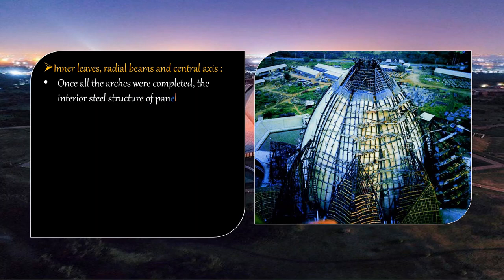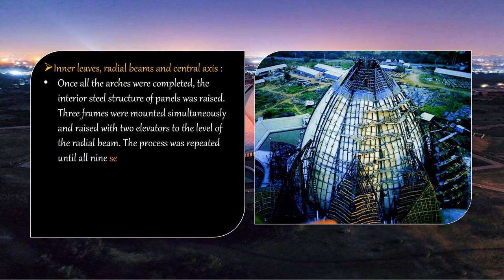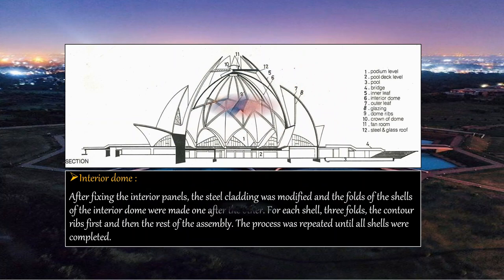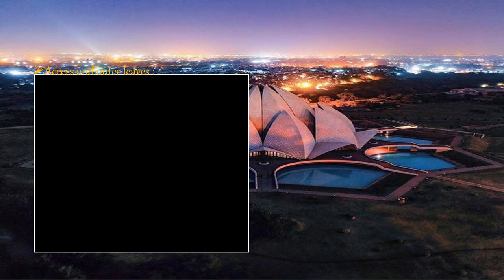Next, the inner leaves, radial beams, and central axis were built. Once all arches were completed, the interior steel structure of panels was raised — three frames were mounted simultaneously and raised with two elevators to the level of the radial beam. This process was repeated until all nine segments were in place. The insertion of the central axis was an independent operation, after which all panels were placed to connect the central axis through the radial beams. For the interior dome, after fixing interior panels, the steel cladding was modified and folds of the dome shells were made one after the other — three folds each, contour ribs first, then the rest of the assembly.